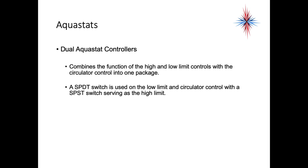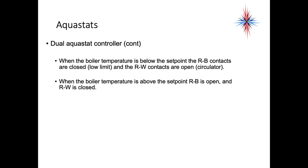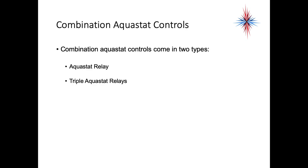Dual aquastat controllers combine the function of the high and low limit controls with the circulator control in one package. A single pole double throw switch is used in the low limit and circulator control, with a single pole single throw switch serving as the high limit. When the boiler temperature is below the set point, the R and B contacts are closed — that's the low limit side — and the R and W contacts are open — that's the circulator side. When the boiler temperature is above the set point, R to B is open and R to W is closed for the circulator.